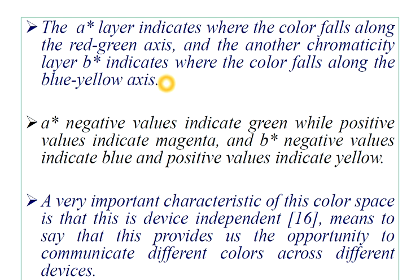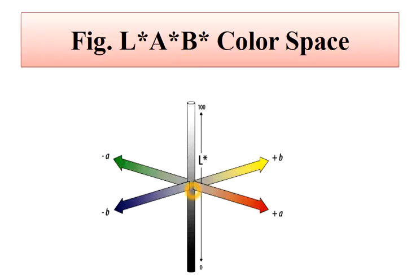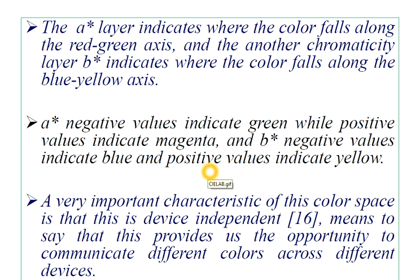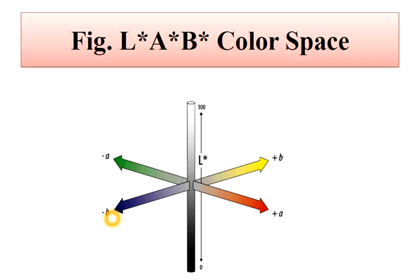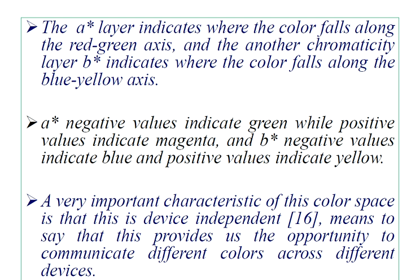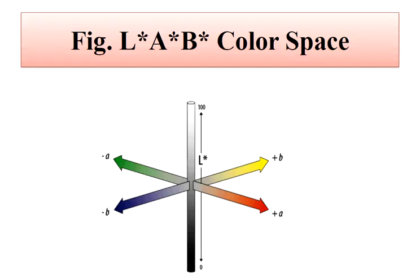We need to know the characteristics and significance of each layer. The A* layer indicates where the color falls along the red-green axis. The B* chromaticity layer indicates where the color falls along the blue-yellow axis. Specifically, A* negative values indicate green and positive values indicate magenta, while B* negative values indicate blue and positive values indicate yellow — very clear from the picture.